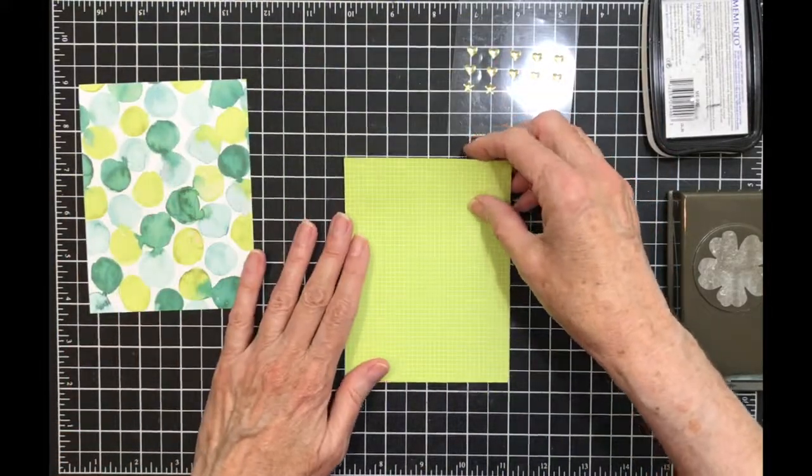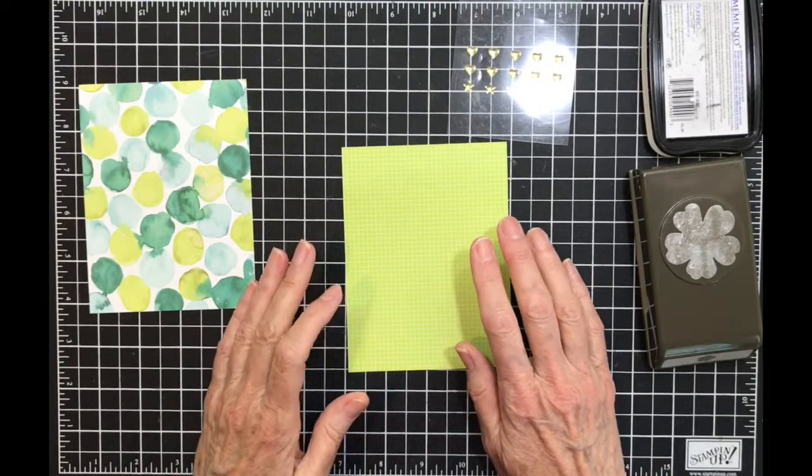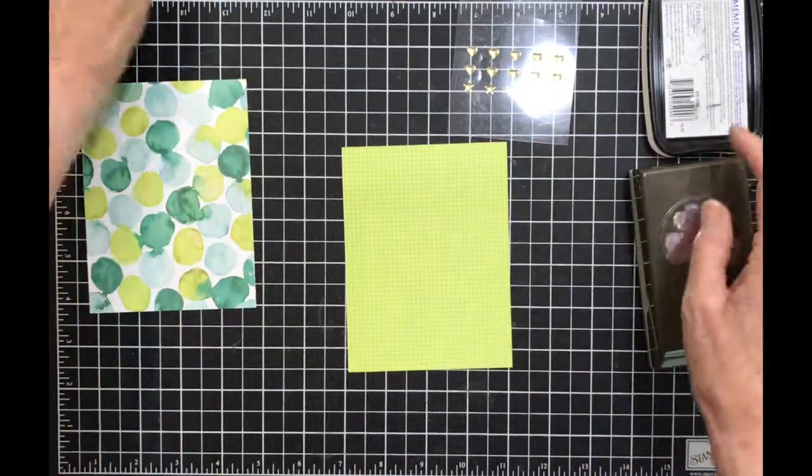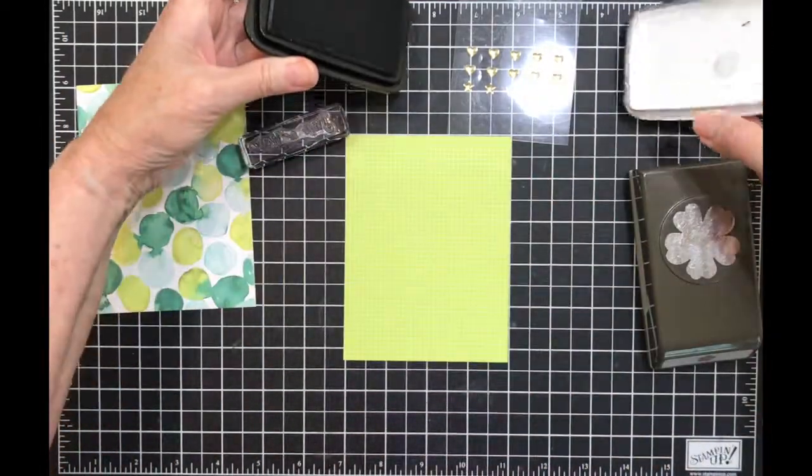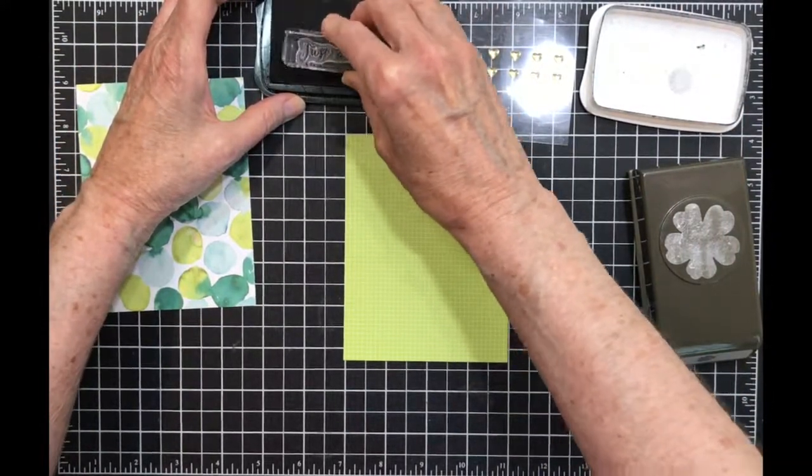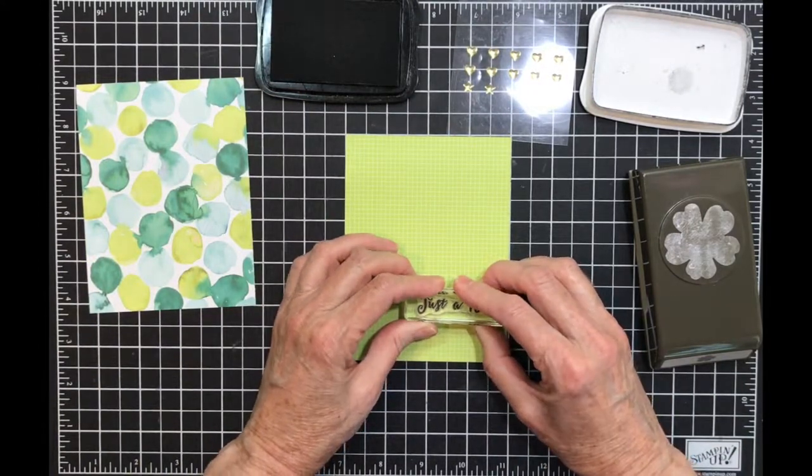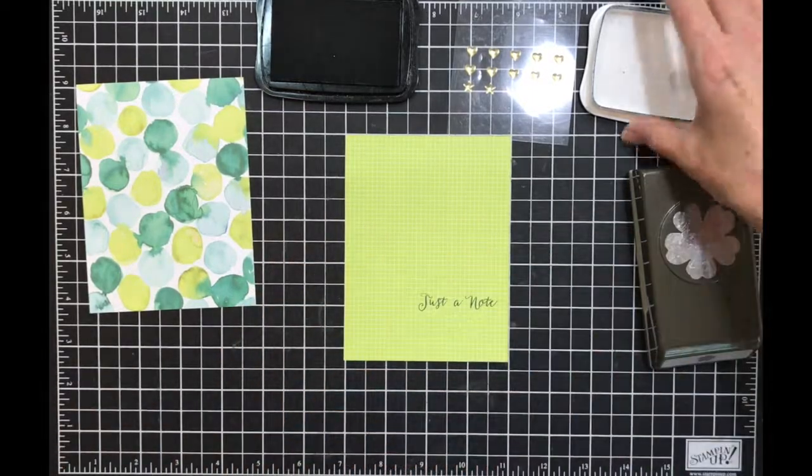Now, for this one, we're going to do some punching and layering. So what I'm going to do first is I'm going to stamp my image or my sentiment down here because I want to work around the sentiment. I don't want to have the sentiment work around. So I'm going to stamp the Just a Note right there, like so, in black.